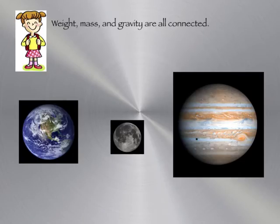So weight, mass, and gravity are all connected. Take this little girl here. She has a certain mass, and her mass is unchanging. The amount of matter in her. On Earth, her weight is 60 pounds. That's because Earth's gravity is pulling on her with an amount of 60 pounds.